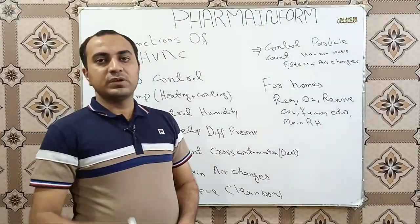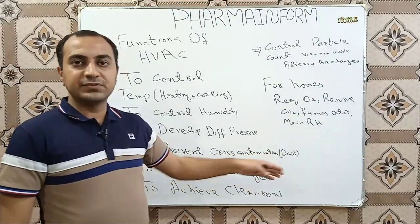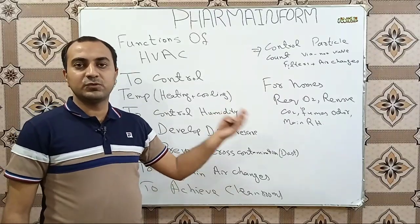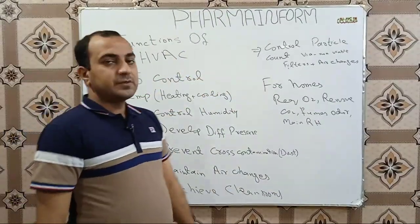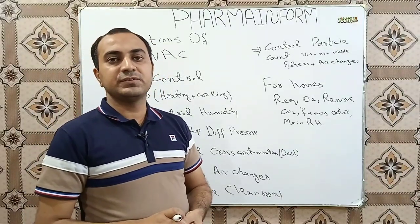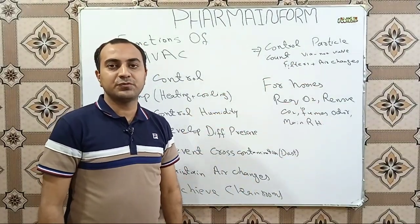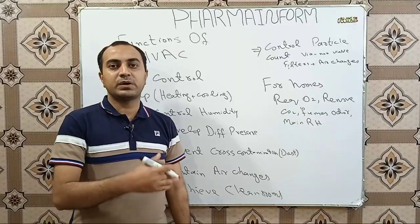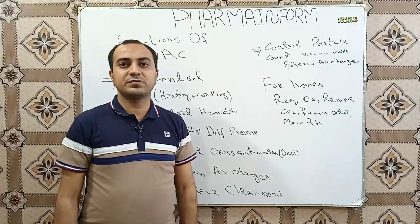To achieve clean room status — as discussed in our previous video on clean rooms, the link is given in the description — we use the HVAC system to meet the required clean room parameters. The HVAC system is used to control the number of viable and non-viable particles inside the pharmaceutical facility. For this, we use different types of filters and the air changes system to control the particle count.